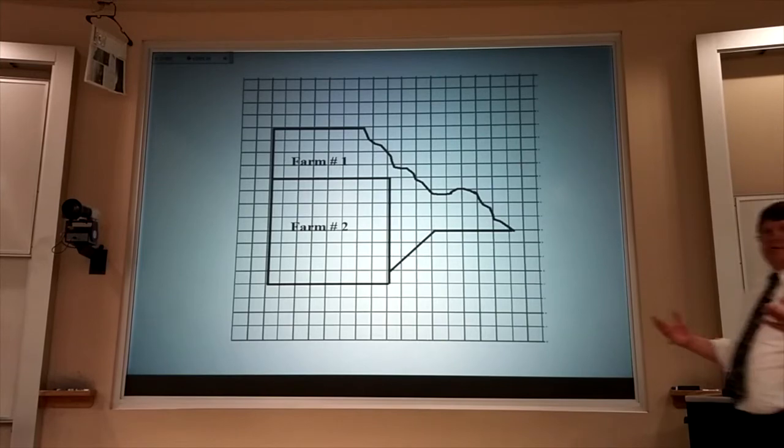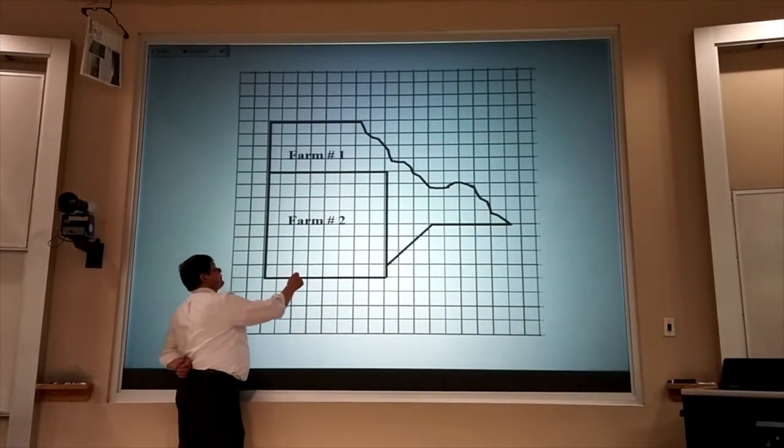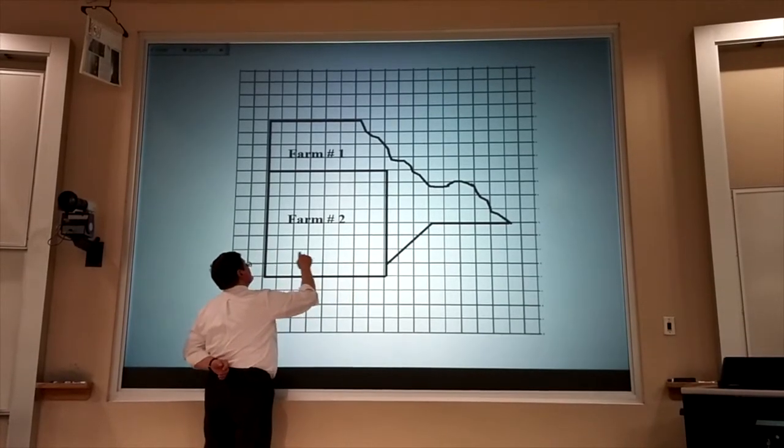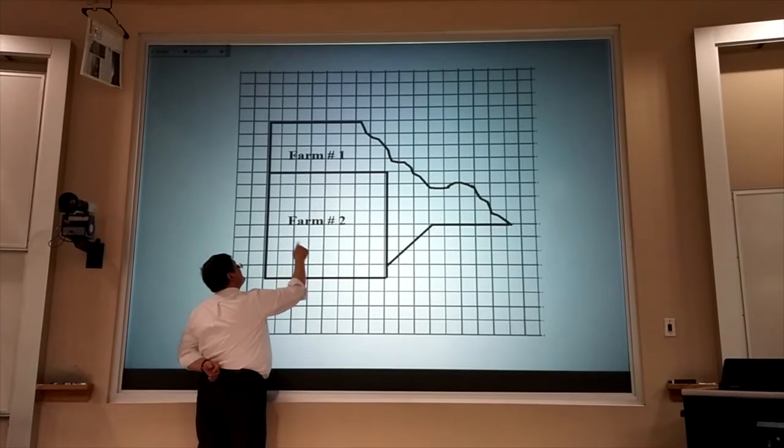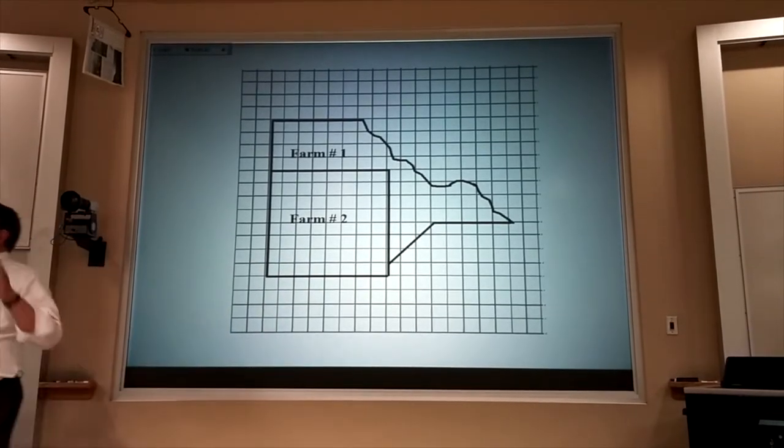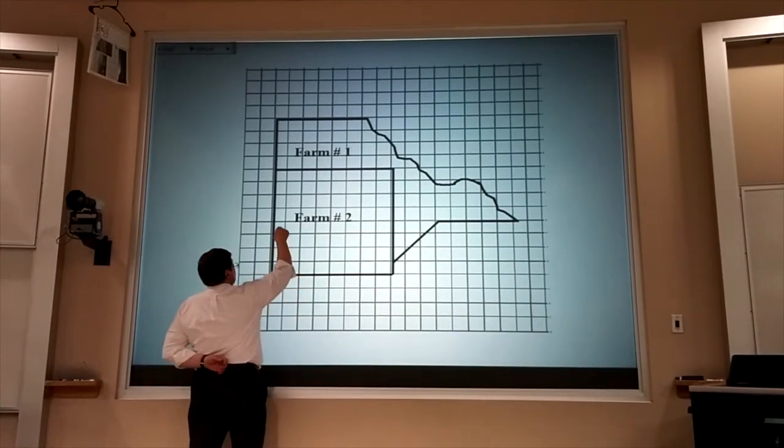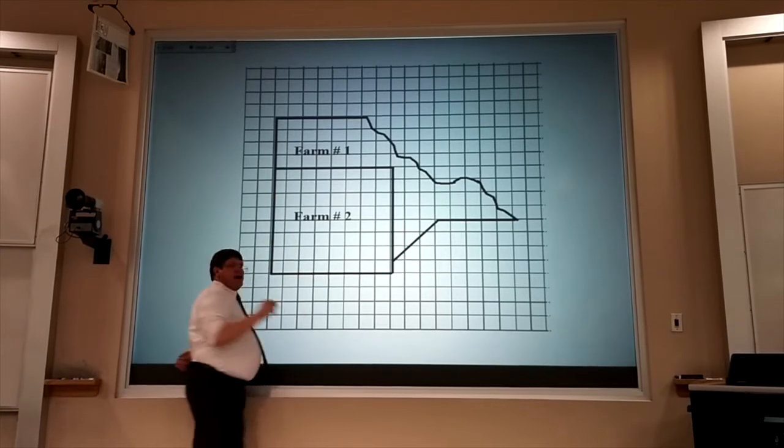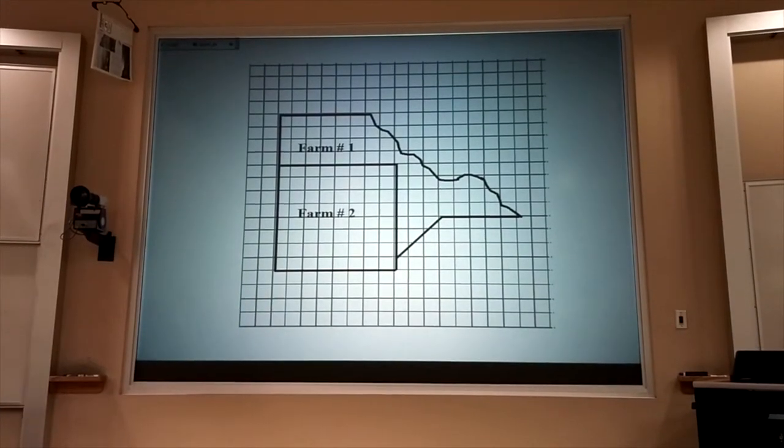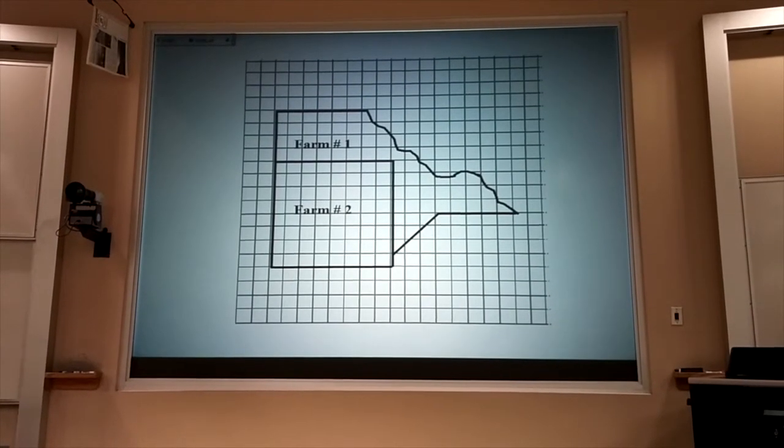If each square represents an acre, then for farm two, I can count 1, 2, 3, 4, 5, 6, 7, 8, 9, 10, 11, 12, 13, 14, 15, 16, 18, 19. Yeah, clearly there's a faster way to do that when you've got a rectangle. If I just count 8 by 8, I can multiply. That's just a fast way of adding the same thing over and over again, and that's why length times width works for a rectangle.